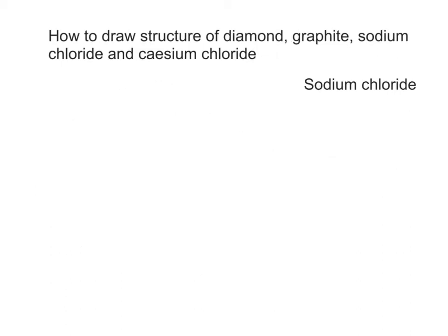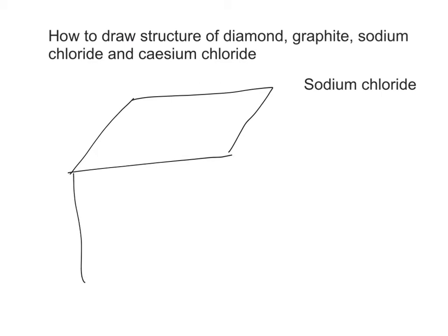The third structure is sodium chloride. Sodium chloride is a giant ionic structure with strong ionic bonds between sodium ions and chloride ions. In order to draw the unit cell more accurately, we need to do some preparatory drawing. Firstly, we draw our cube.